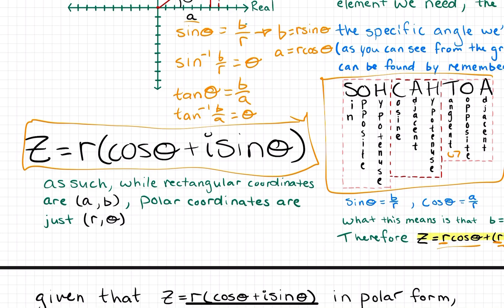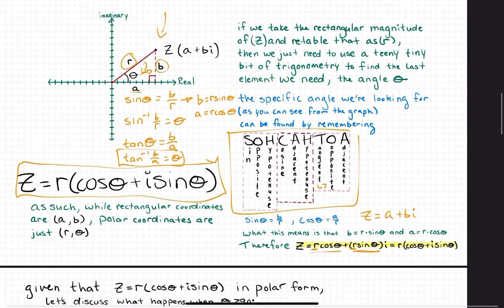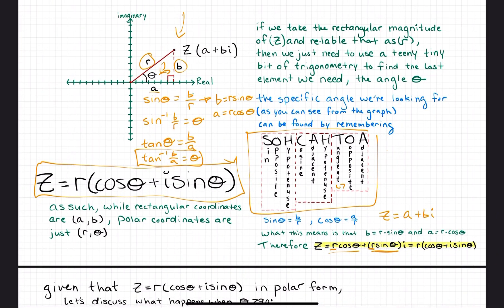In polar form, instead of A and B being our coordinates, our coordinates are just R and theta. We found R using our rectangular coordinates. We just need to find theta using a little bit of right triangle trig — really, you just need a calculator to compute the inverse tangent of B over A. Inverse tangent of (B/A) equals theta in this case.